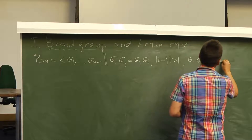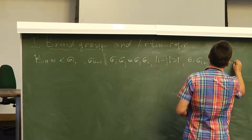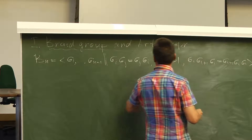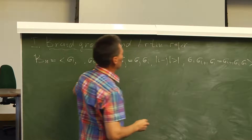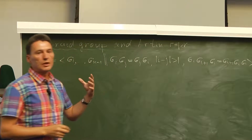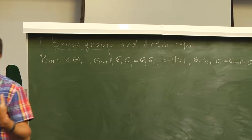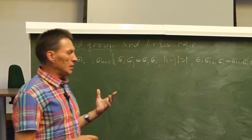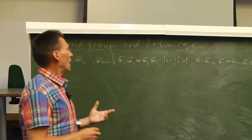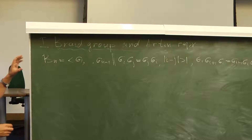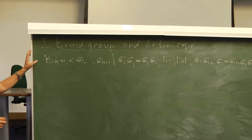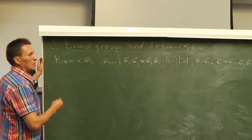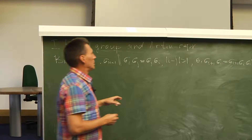If we consider the braid group as an object of combinatorial group theory, then three great problems are formulated in this theory, and one of them is the so-called word problem. I think it should be σₙ₊₁.